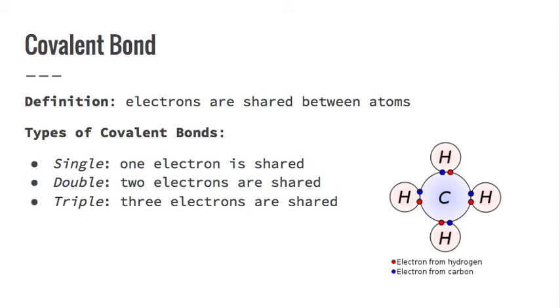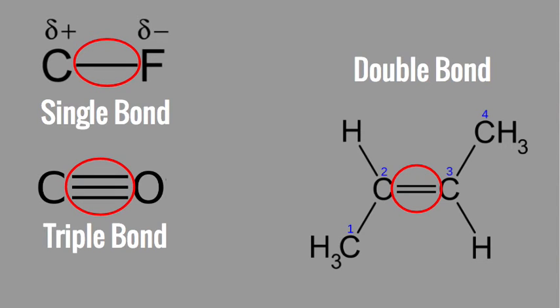The way we write this — especially when talking about organic molecules, which we'll discuss a lot more later — a single bond is just a dash between the two, a double bond is two dashes, and a triple bond is three. Just know that a single bond means they share a single electron, double means they're sharing two, and a triple means they're sharing three.